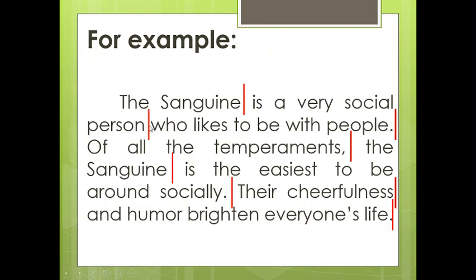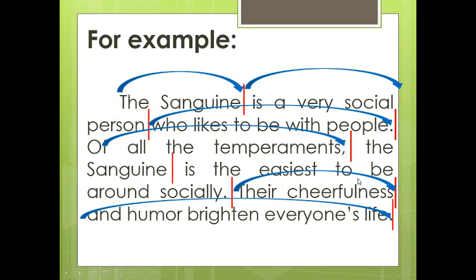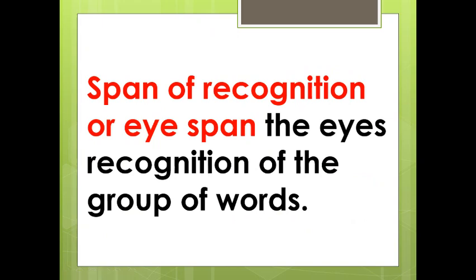Another example: 'The sanguine is a very social person who likes to be with people. Of all the temperaments, the sanguine is the easiest to be around socially. Their cheerfulness and humor brighten everyone's life.' Span of recognition or eye span means the eye's recognition of a group of words.